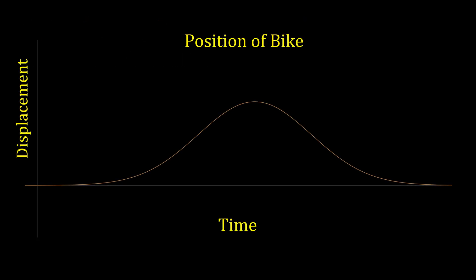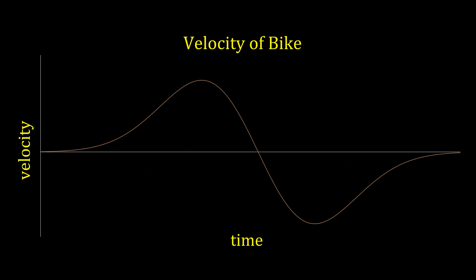Earlier we found the velocity of a bike based on the position at some time, but what if we were given the velocity of the bike at various points in time and were tasked with finding out how far it travelled? We'd need to anti-differentiate, or in other words, integrate.